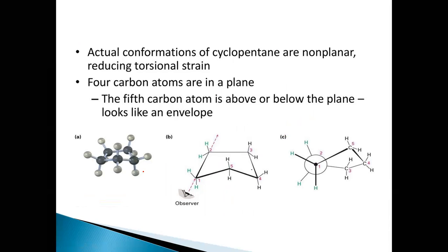So in order to relieve from this torsional strain, cyclopentane assumes a curved or non-planar shape — that means all five carbon atoms are not in one plane. If you see the structure, four carbon atoms are in one plane. Numbering them for convenience: one, two, three, four, and five — the fifth carbon atom is out of the plane, that is, it is below the plane of the other four carbon atoms. So now there is a certain amount of relief from the torsional strain.